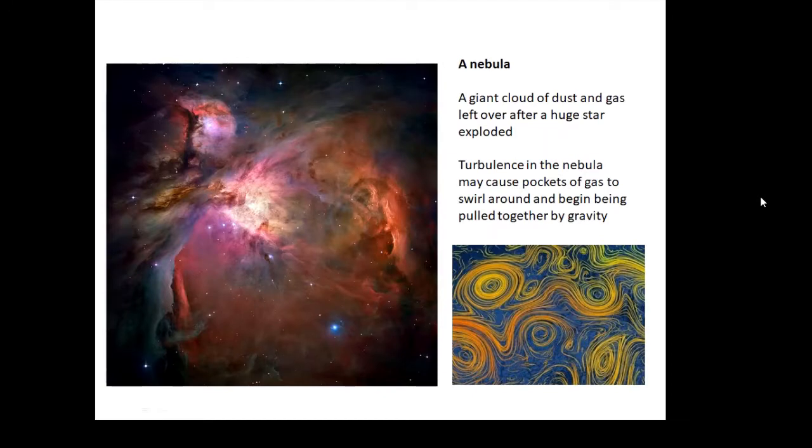Our Sun comes from a nebula. This picture here, this is the Orion nebula and there's an awful lot of stars get born in there. There is a stellar nursery in the Orion nebula. It's a giant cloud of dust and gas left over after a huge star exploded, left over after a supernova.